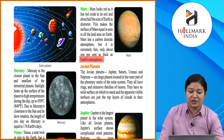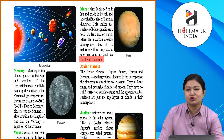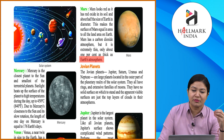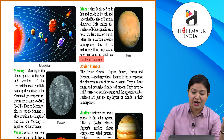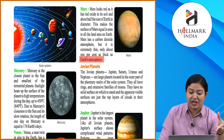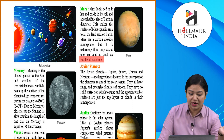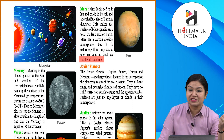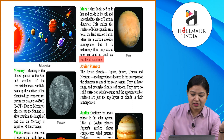Mars looks red because its soil and rocks are red in color. Mars's size is about half that of Earth. Mars has a carbon dioxide atmosphere, which is quite prominent.